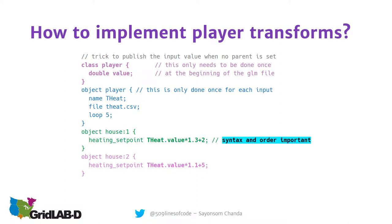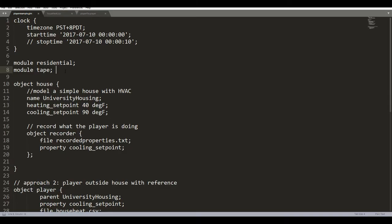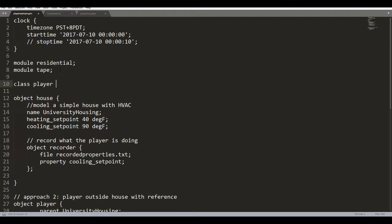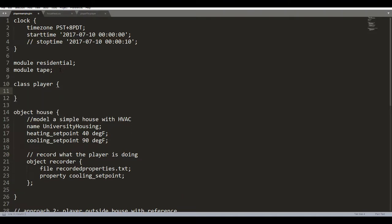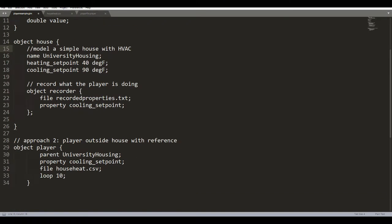Once we have player transforms, it becomes a very powerful tool — we can change different objects using the same player with different manipulations for each. To implement this, at the beginning of the program you declare 'class player' and assign a value to it. This class player declaration needs to be done only once at the top of your GLM file. Then you write the player once and use it across multiple objects.